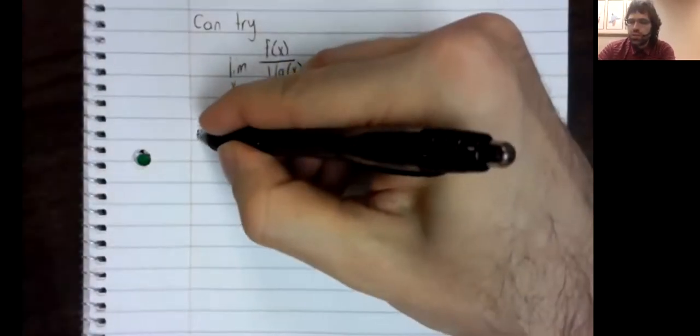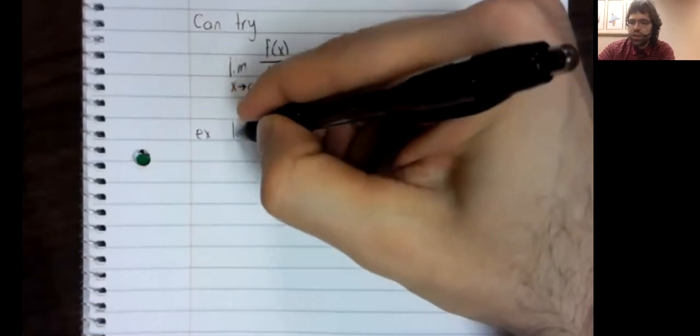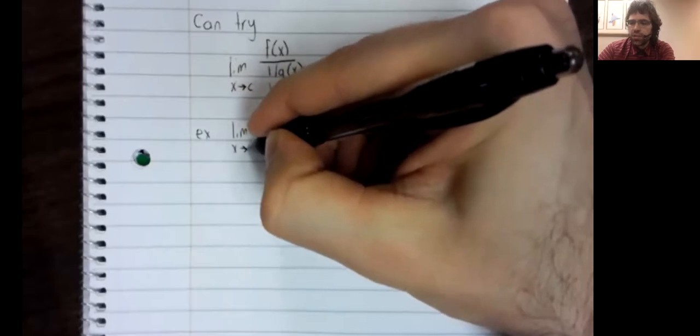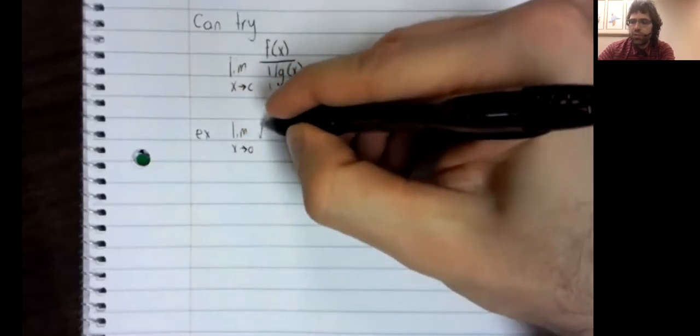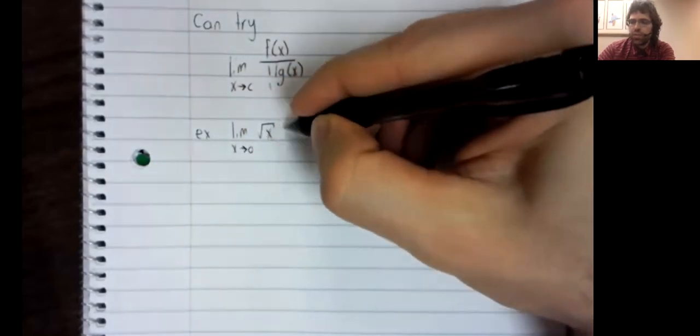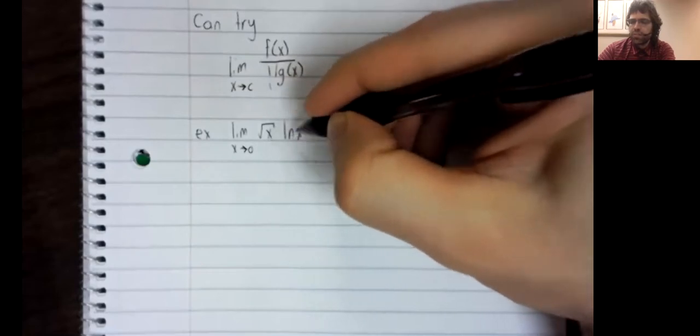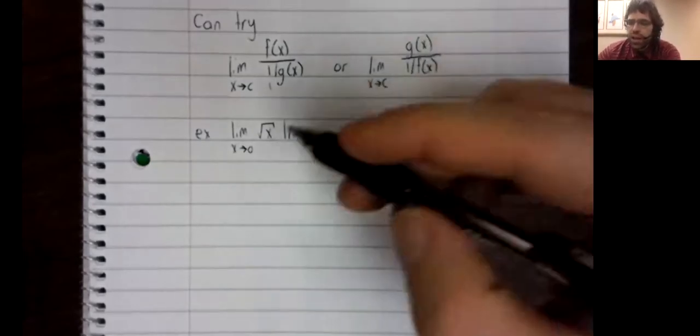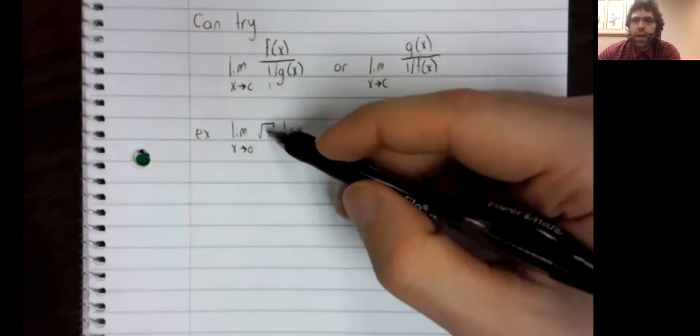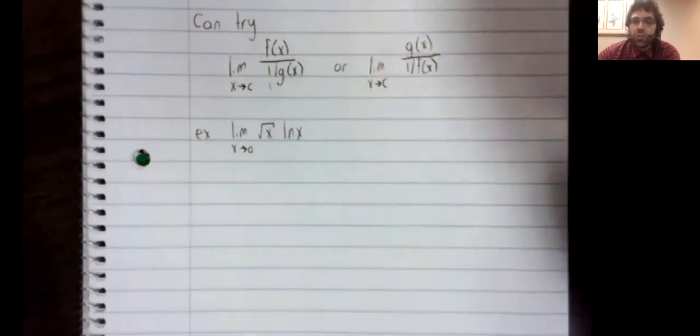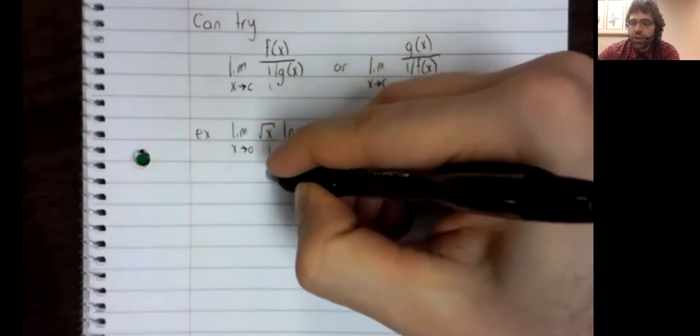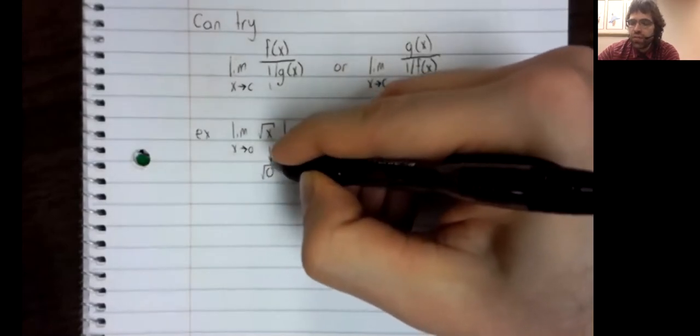Let's try to compute the limit as x goes to zero of the square root of x times the natural log of x. And at zero, the square root of x is just going to the square root of zero, which is zero.